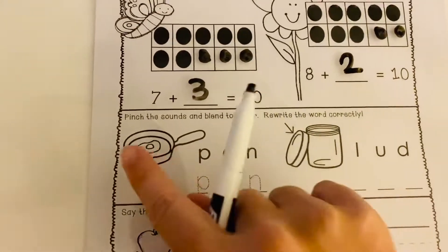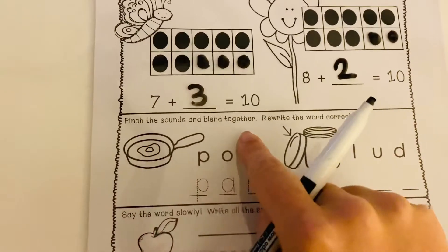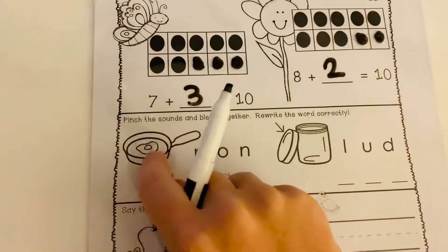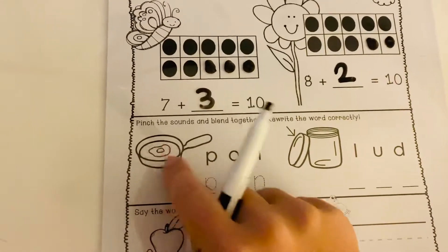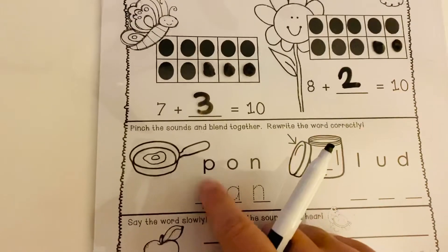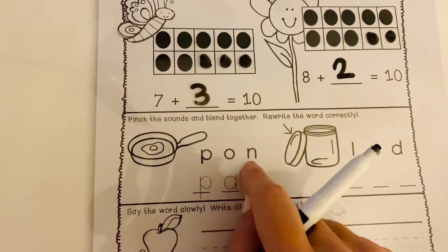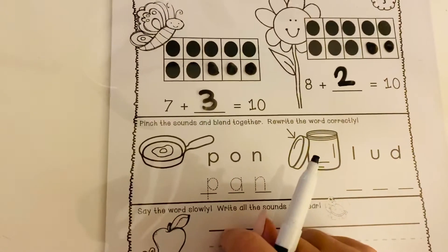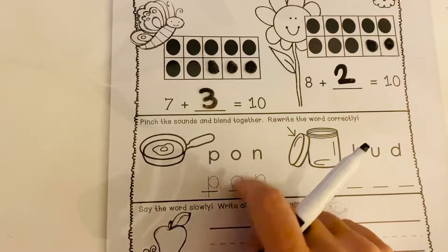Next, let's go down here and it says pinch the sounds and blend together. Rewrite the word correctly. So what we see right here is we see maybe it's going to be egg or maybe it's going to be pan. But let's see what the word is. It's p-on, pon. So I think they're going for pan. So we want to figure out what sound is wrong.